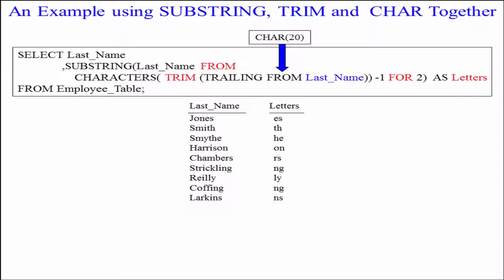Like Jones would be one two three four five and it's not going to start in position five because we want the last two letters. We actually use this minus one for two.